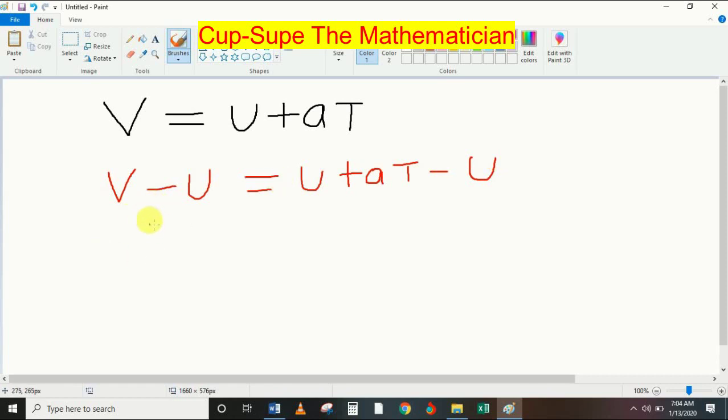So now I'm going to minus U from both sides. This U cancels this one. So V minus U equals AT. You realize no more U is on this side.